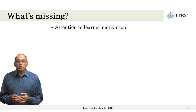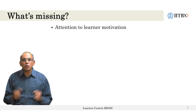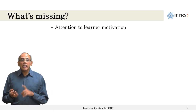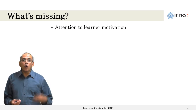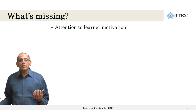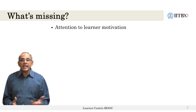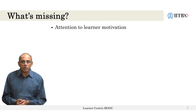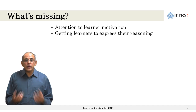So to summarize, what is missing? If we simply make these four components available, what is missing is attention to learner motivation. Some learners may want more information on a particular topic, some learners may lack some prerequisite, and some learners may have joined your course for a variety of reasons. So attention to learner motivation needs to be taken into account. What is also missing is getting learners to express their reasoning.